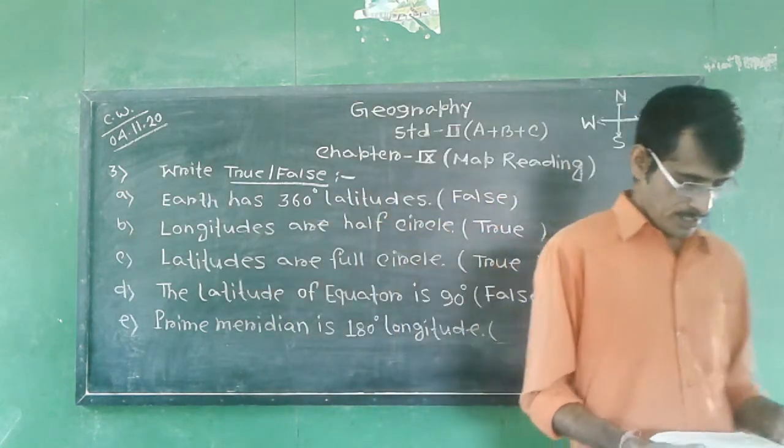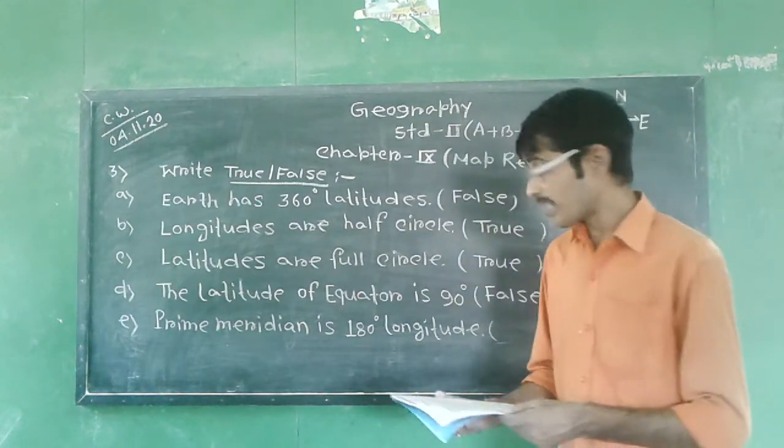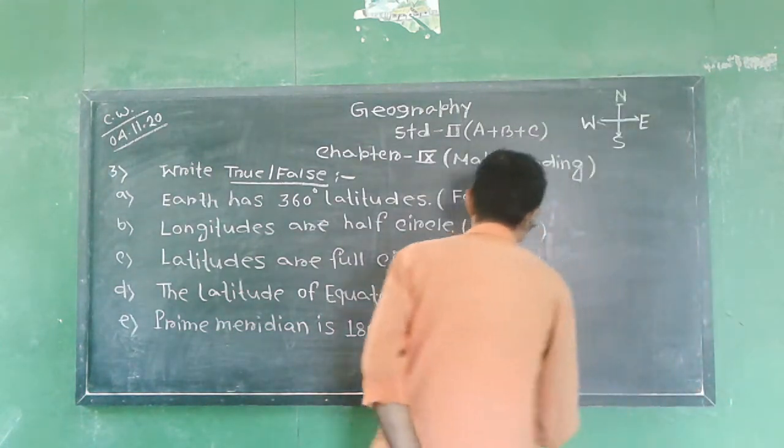And prime meridian is 180 degrees longitude - it's also a false statement.